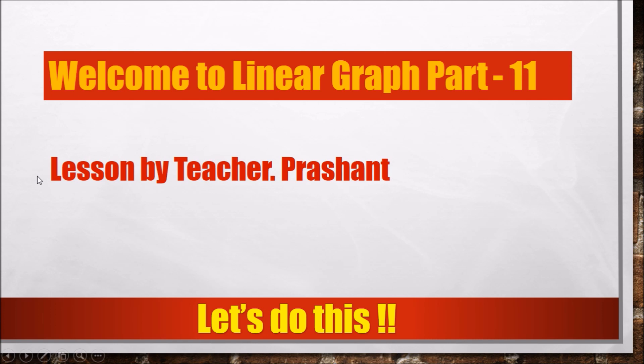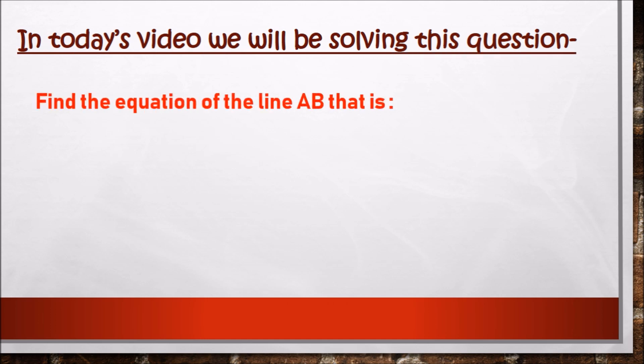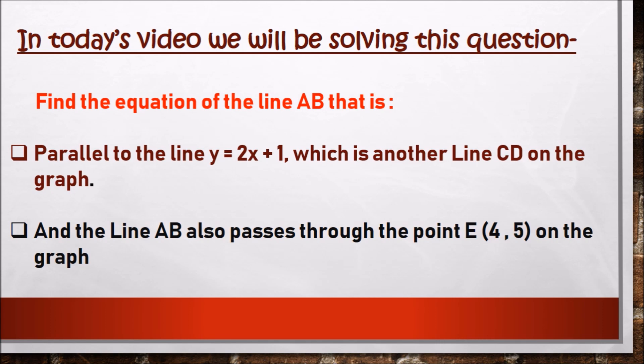Hello and good evening students, this is teacher Prashanth back with another lesson on linear graphs. In today's lesson we will be solving a question: we will be finding the equation of a line AB that is parallel to line y = 2x + 1, which is line CD on the graph, and line AB also passes through point E where x is 4 and y is 5. So how do we find the equation of line AB with these two pieces of information?